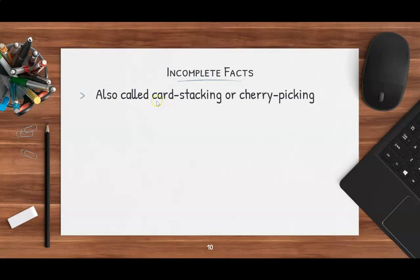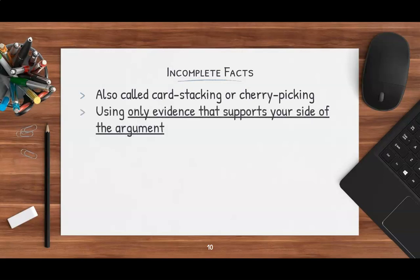The idea being that if you stack the cards, you're using just the ones that would be in your favor. And with cherry picking, the idea being that you are selecting just pieces of information. With this fallacy, it really is best summed up by saying that it's using evidence that supports your side of the argument and only evidence that supports your side. You are conveniently ignoring any evidence that might detract from your argument or support somebody who is against it — just using the useful things for yourself.